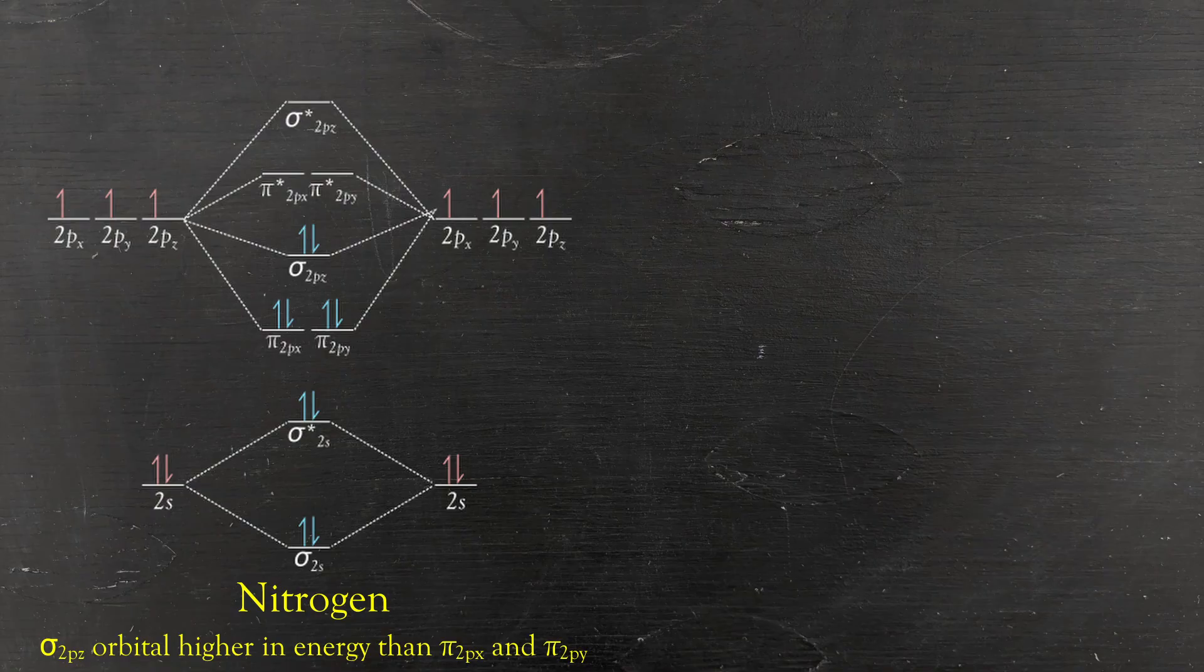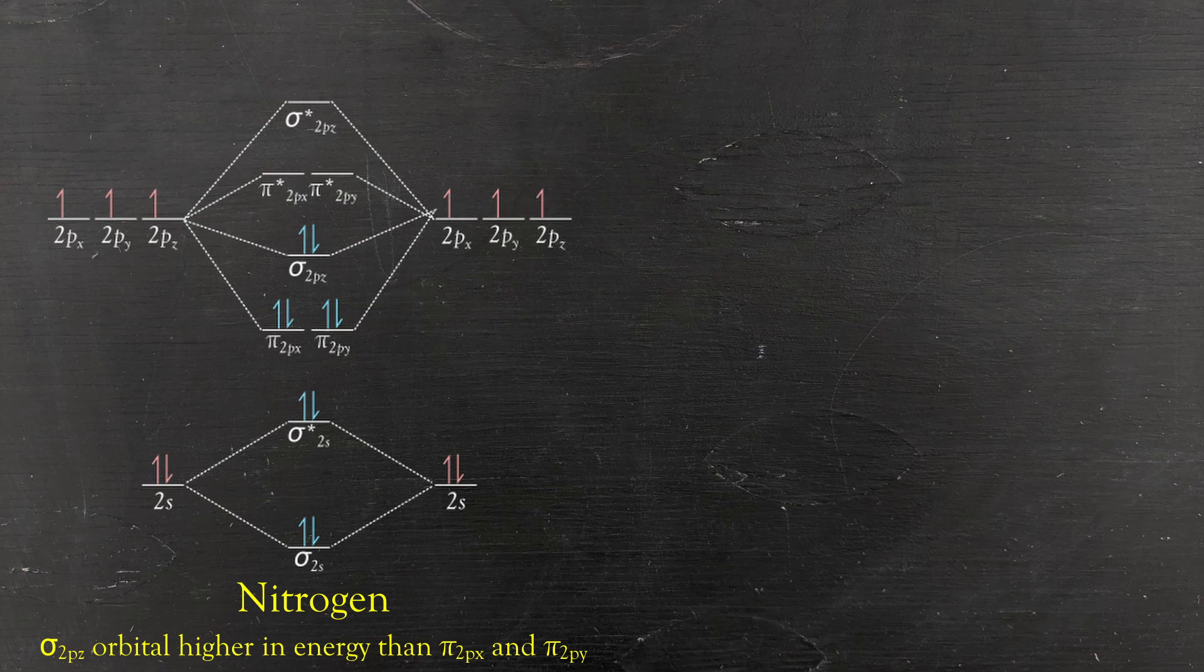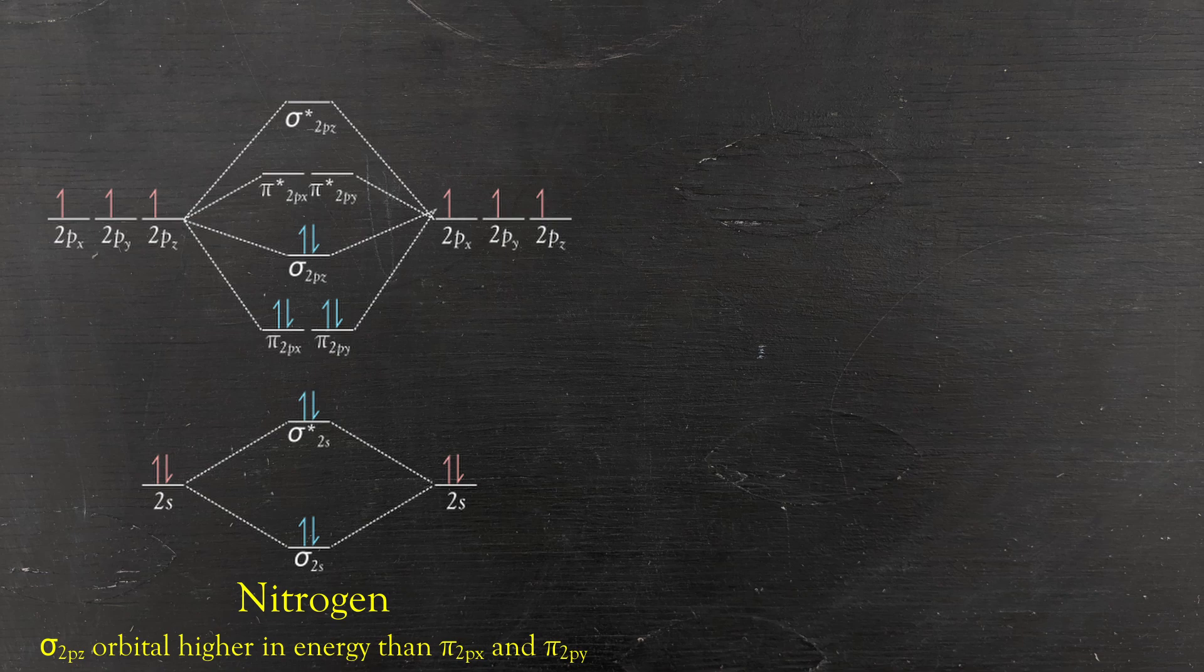And experimentally we kind of find that as you go up to nitrogen you cannot ignore the p and the s interaction, but once you move over to oxygen now it's okay to ignore it and the order of which the different molecular orbitals form changes.